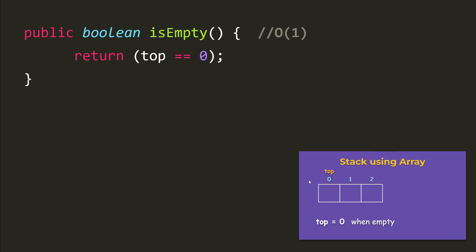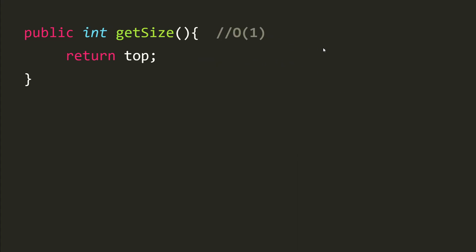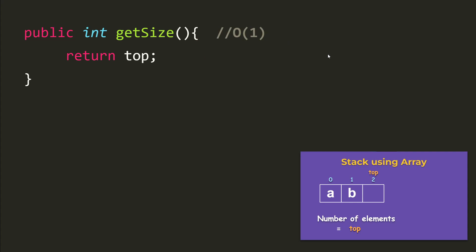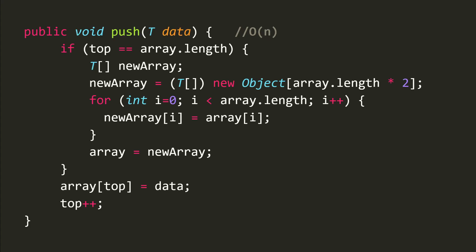When the stack is empty, top equals zero, so isEmpty just returns top == 0 — all of O(1). For getSize, the number of elements equals top, so we just return top — also O(1).